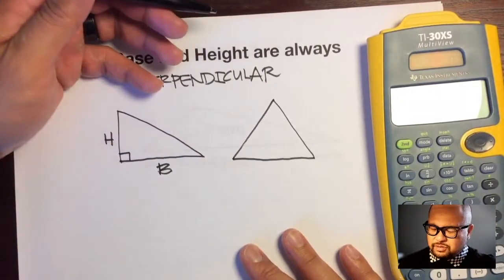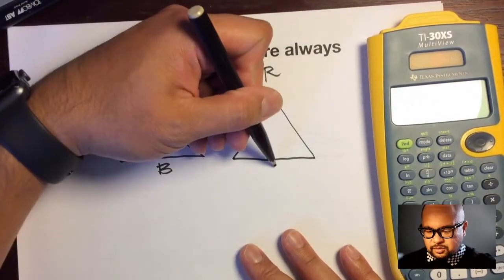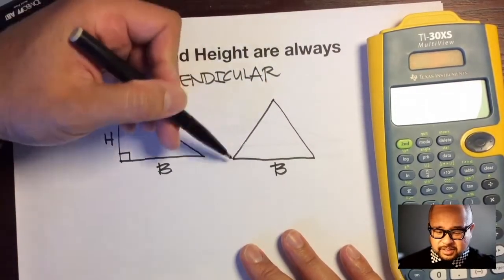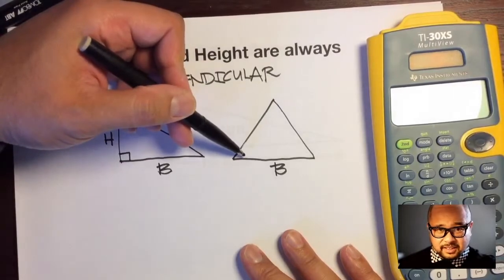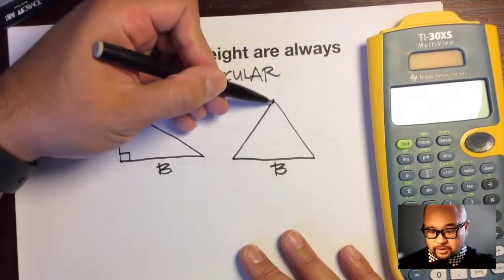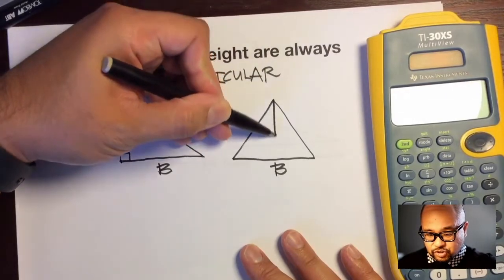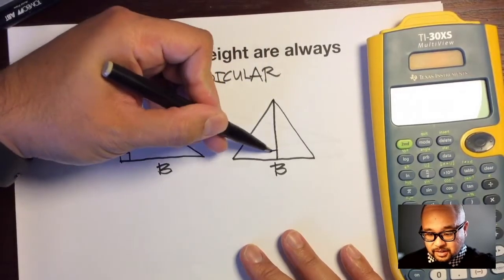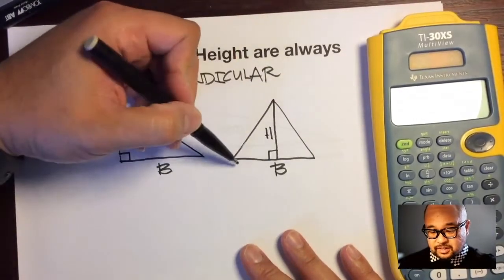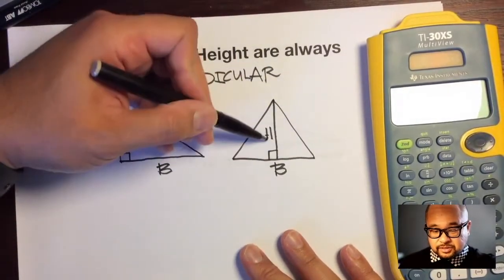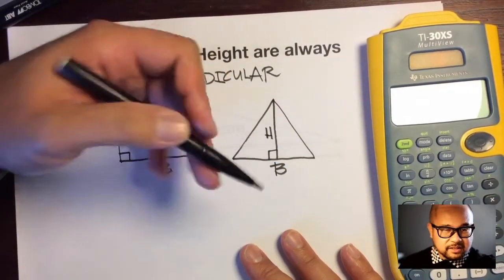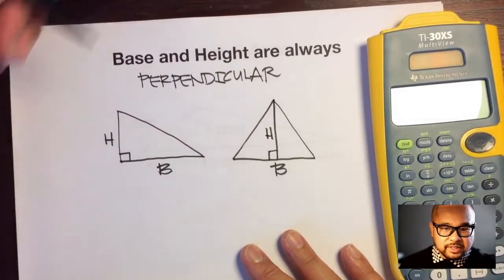Here's another example. Draw a line like this — which two sides are the base and height? Let's call this the base. Which side is the height? This doesn't look like a 90 degree angle, and neither does this one. So we draw a line that goes straight down, and that is our height, because this side is perpendicular to the base — it's a 90 degree angle. Notice it makes an upside-down T, which is the symbol for perpendicular.